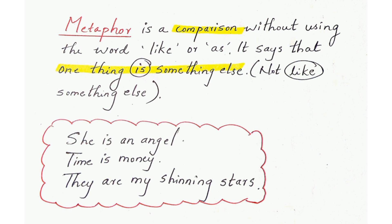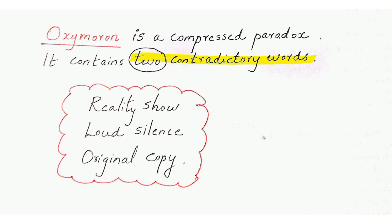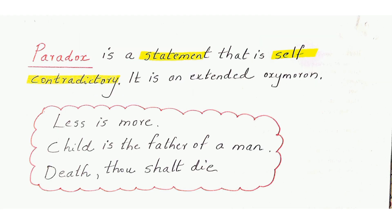The next category covers figures of speech which use contrast: oxymoron, paradox, and antithesis. Oxymoron contains two contradictory words — only two words, and both are opposites of each other. For example, 'reality show' — reality is the opposite of show. 'Loud silence,' 'original copy' — if something is original it can't be a copy. So oxymoron contains two words that are opposites of each other.